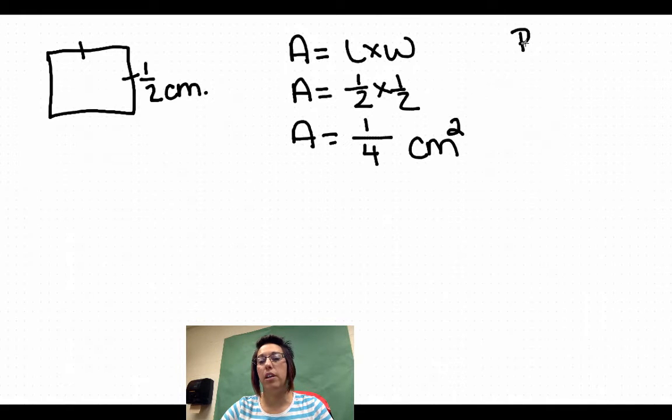Remember our P, A, V strategy. P is for perimeter, has one dot. That means it's just the unit. A is for area, two dots down here on the bottom. That means it's squared. And of course, volume has three dots there. And volume is cubed.